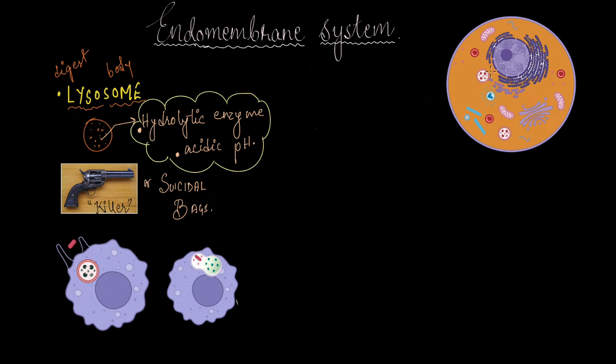For example, let's imagine that one of the mitochondria is not functional. The lysosome will go and fuse with the membrane of mitochondria. It will release its lytic enzymes and destroy the entire organelle.